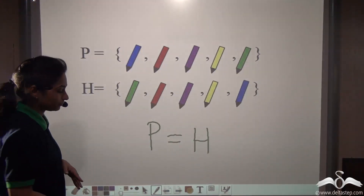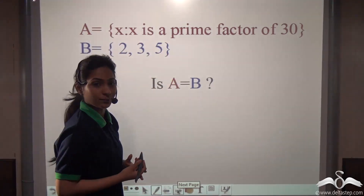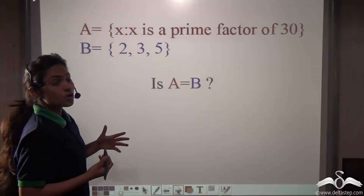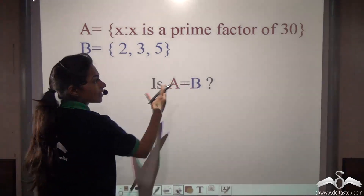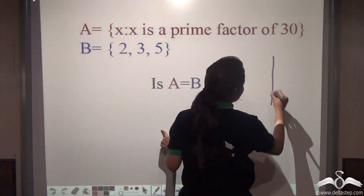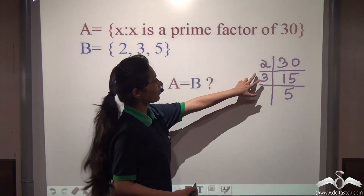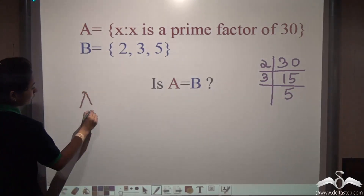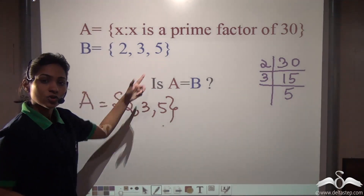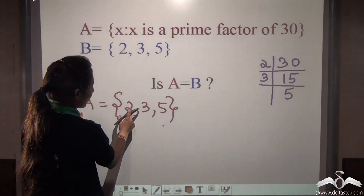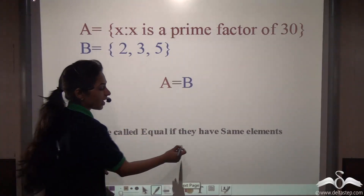Now take this example. Set A equals {x : x is a prime factor of 30}, whereas set B is {2, 3, 5}. Set B is given in roster form and set A is in set builder form. Let us write set A in roster form. The prime factors of 30 are 2, 3 and 5. So set A is {2, 3, 5} and set B is {2, 3, 5}. Each element of A equals each element of B, so yes, A is equal to B. Sets are called equal if they have the same elements.